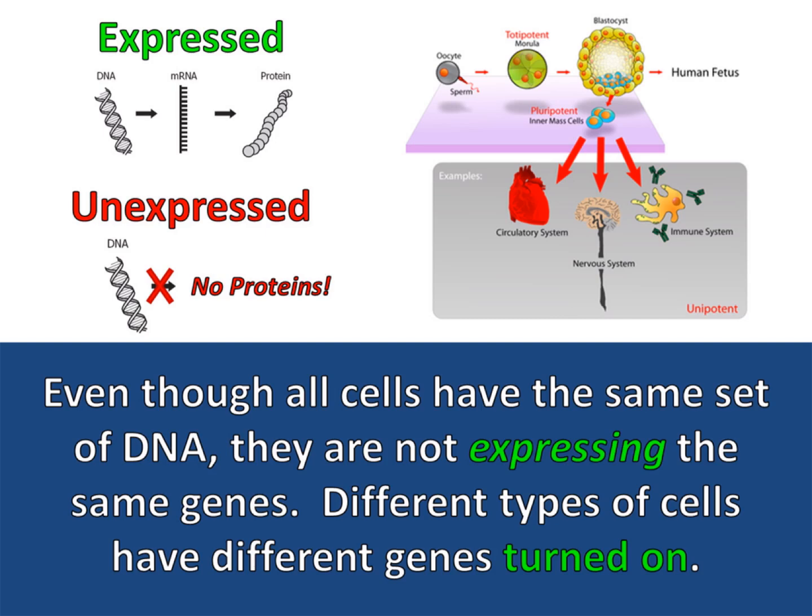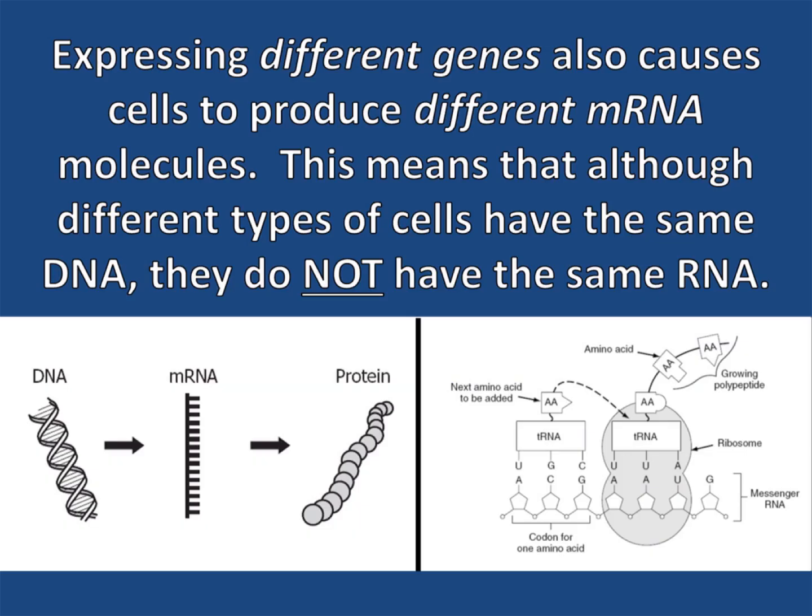Even though all cells have the same set of DNA, they are not expressing the same genes. Different types of cells have different genes turned on. Expressing different genes also causes cells to produce different messenger RNA molecules, so although different types of cells have the same DNA, they do not have the same RNA.